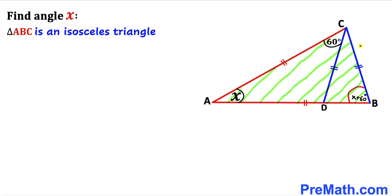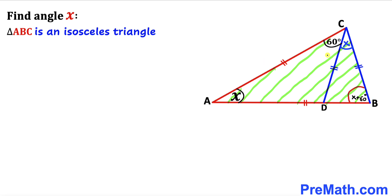Now let's focus on the big triangle ABC. We know this is an isosceles triangle since this side length equals this side length. Therefore this angle has got to be equal to this whole angle. We can see that this angle is X plus 60 degrees and this angle is 60 degrees, so this angle has got to be X. Therefore this whole angle becomes X plus 60 degrees, the same as the other one.